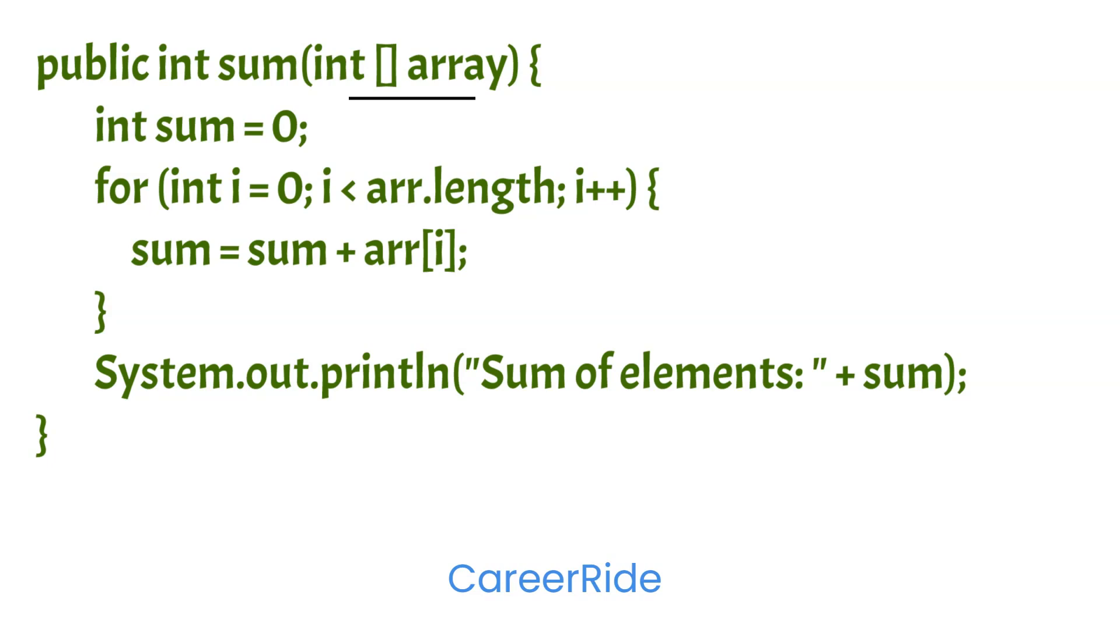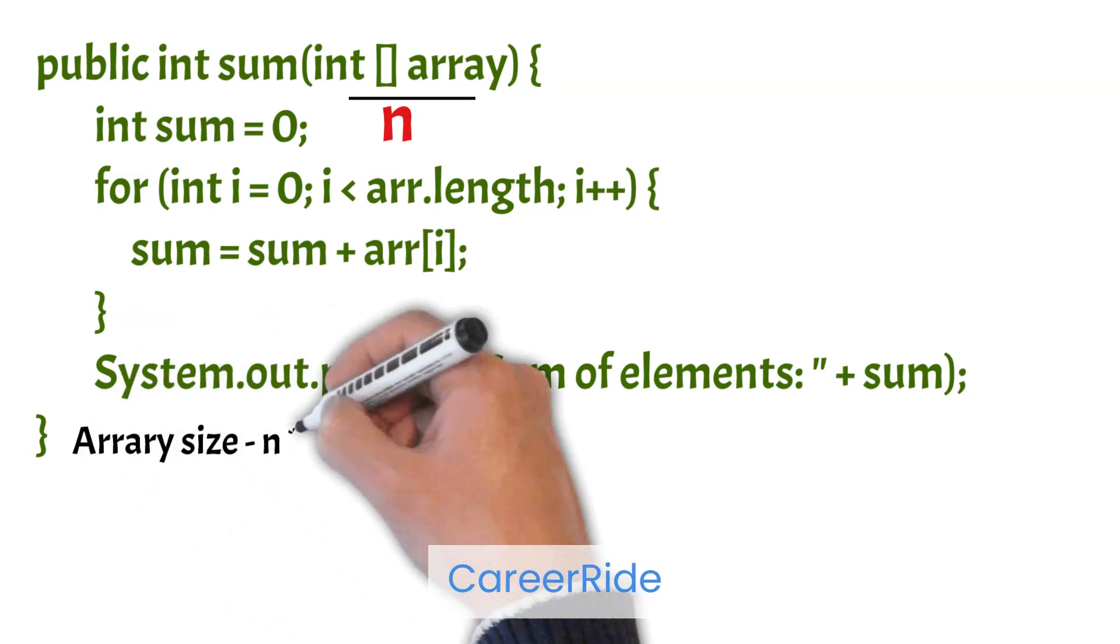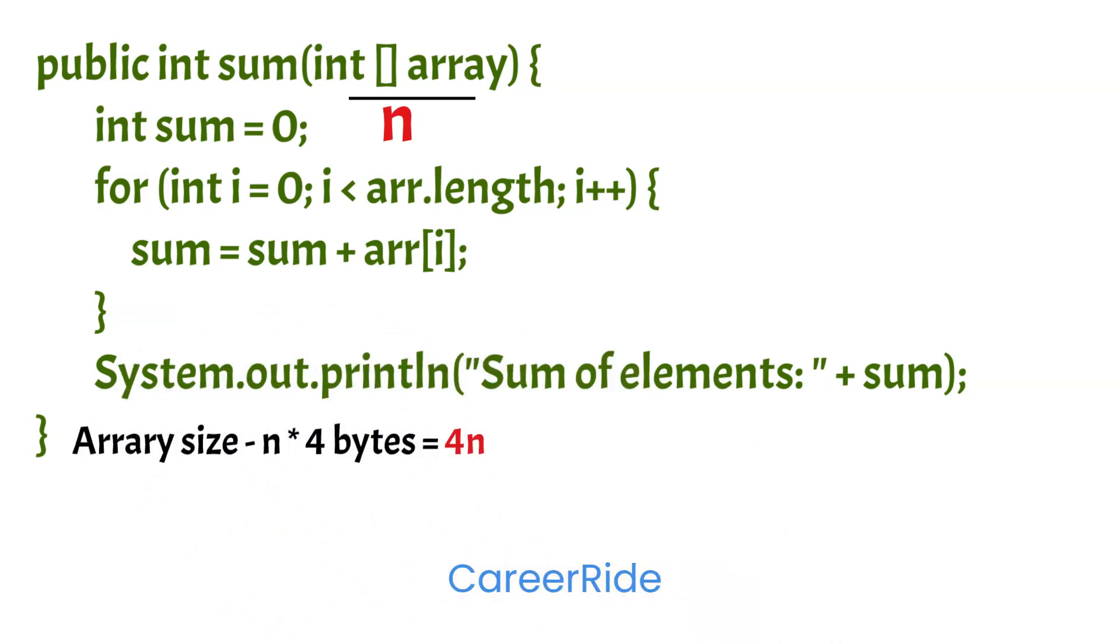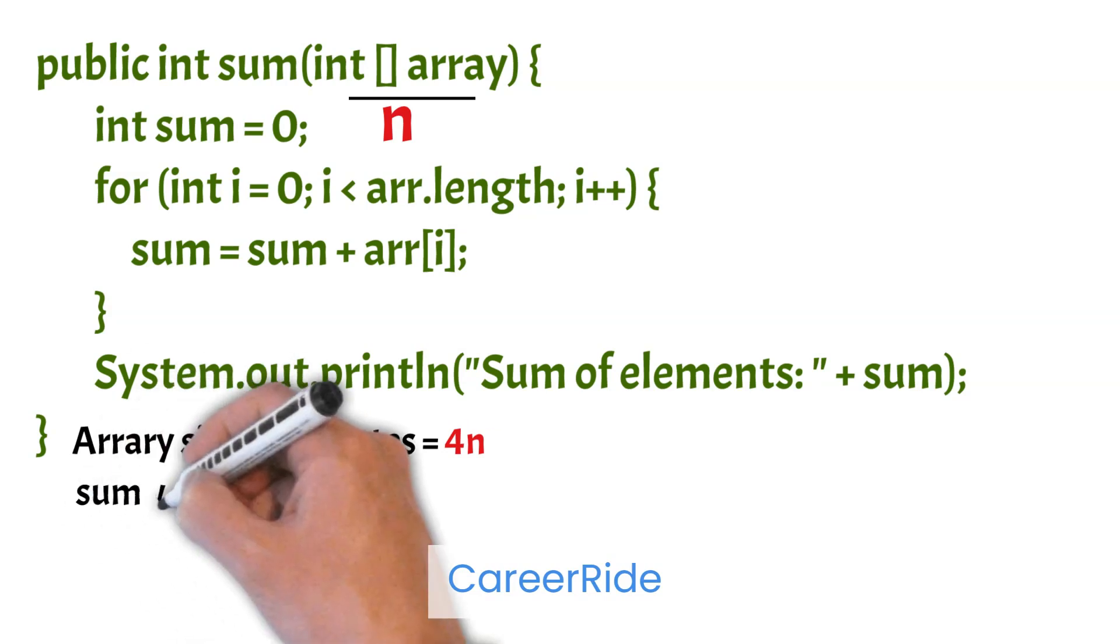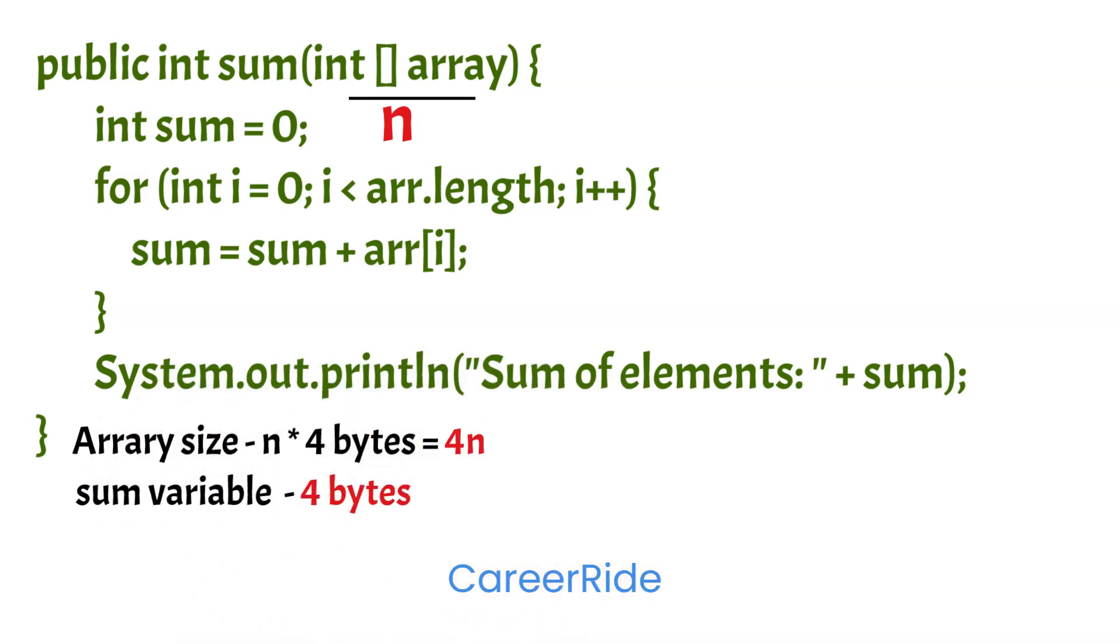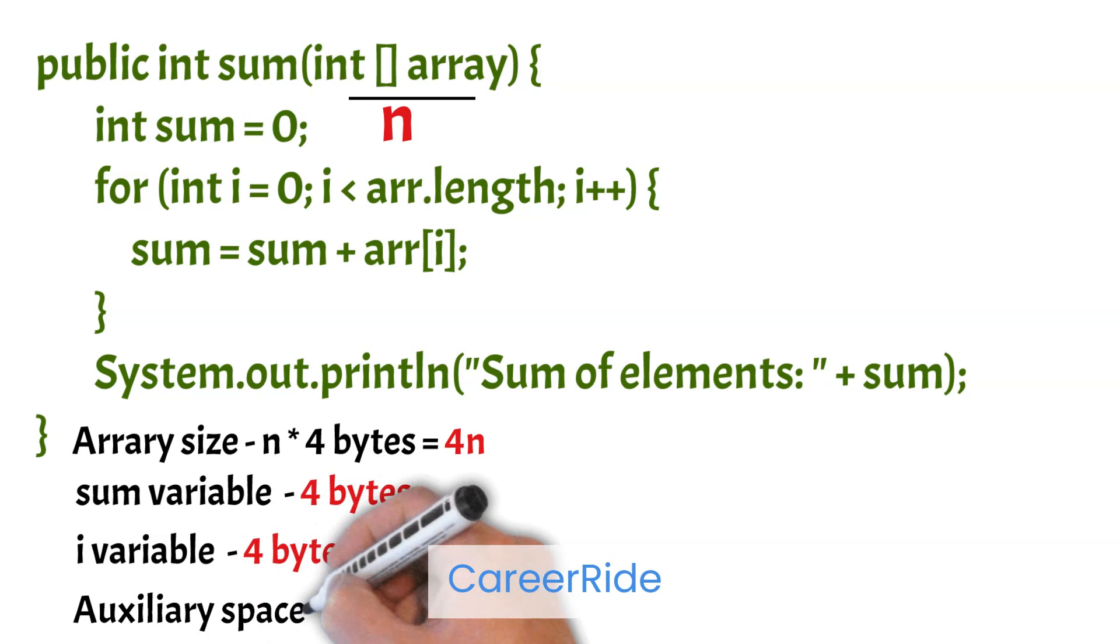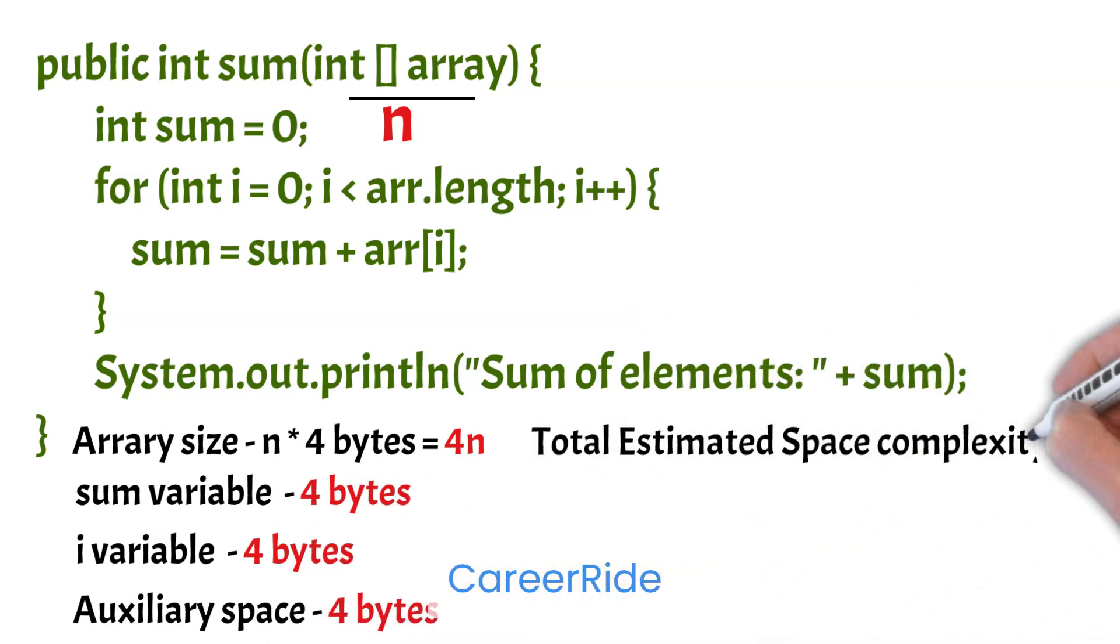Now let's assume array size is n. So the space occupied by the array would be n into 4 bytes, that is 4n. So it is not constant. Now there is another variable called sum which will also occupy 4 bytes. I variable will also take 4 bytes. So the total estimated space complexity would be 4n plus 12 bytes.